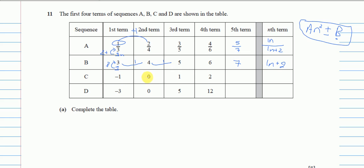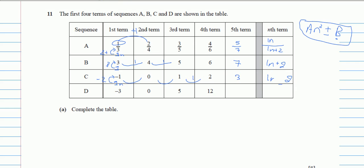For the next sequence: -1, 0, 1, 2, 3. We are always adding 1, so it's 1n. To find the constant, compare 1n with the first term -1: to get from 1 to -1 we subtract 2. So the formula is n - 2.